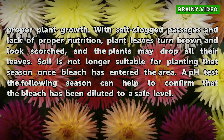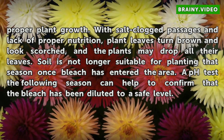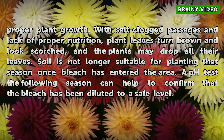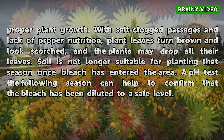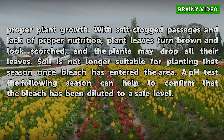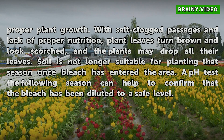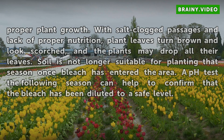With salt-clogged passages and lack of proper nutrition, plant leaves turn brown and look scorched, and the plants may drop all their leaves. Soil is no longer suitable for planting that season once bleach has entered the area. A pH test the following season can help to confirm that the bleach has been diluted to a safe level.